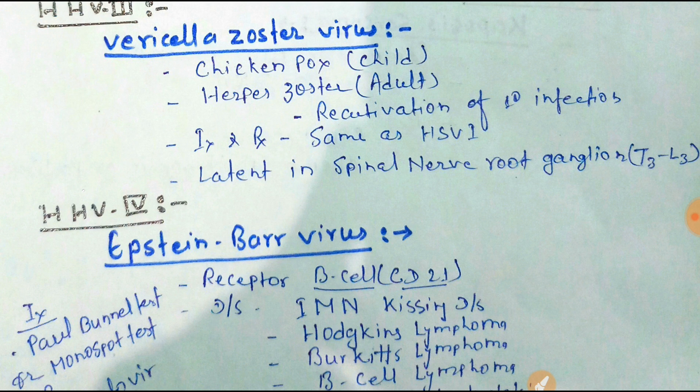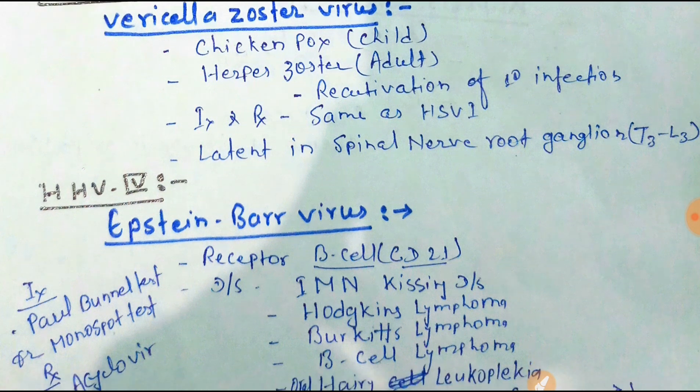Herpes zoster is latent in the spinal nerve root ganglion, between the T3 and L3 vertebrae. Diagnosis and treatment are the same as for Herpes Simplex Virus type 1.